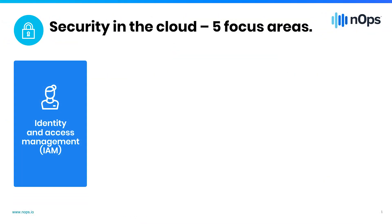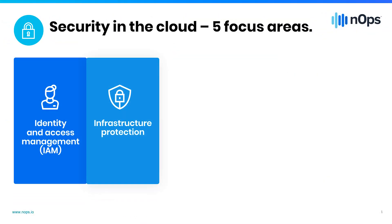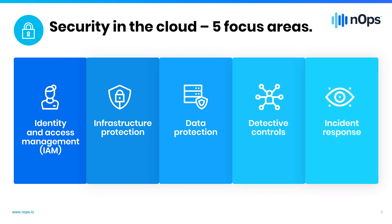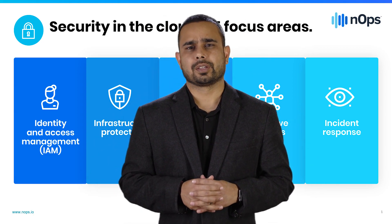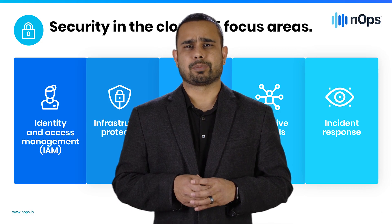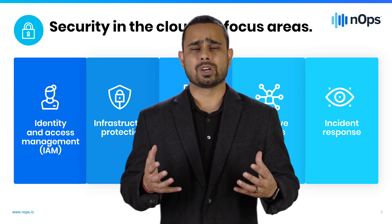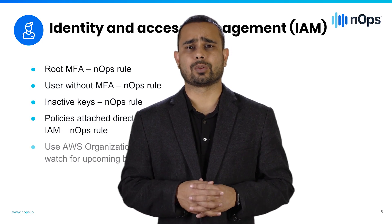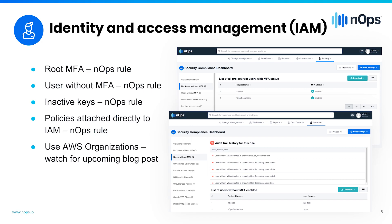Number one is identity and access management. Number two is infrastructure protection. Number three is data protection. Number four is detective controls. And number five is incident response. Under identity and access management, the first guideline is to protect your root account. You want to make sure there's an MFA on your root account. Companies like Netflix actually go as far as locking their MFA in a safe.